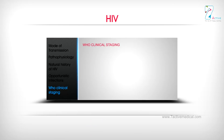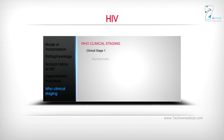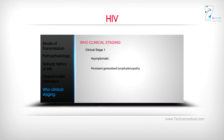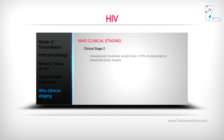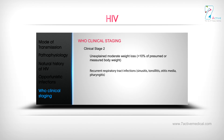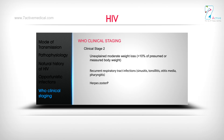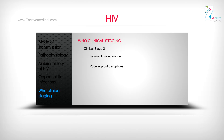WHO Clinical Staging — Stage 1: Asymptomatic; persistent generalized lymphadenopathy. Stage 2: Unexplained moderate weight loss (less than 10% of body weight); recurrent respiratory tract infections (sinusitis, tonsillitis, otitis media, pharyngitis); herpes zoster; angular cheilitis; recurrent oral ulceration; popular pruritic eruptions; seborrheic dermatitis; fungal nail infections.